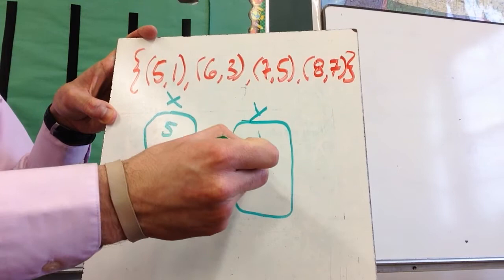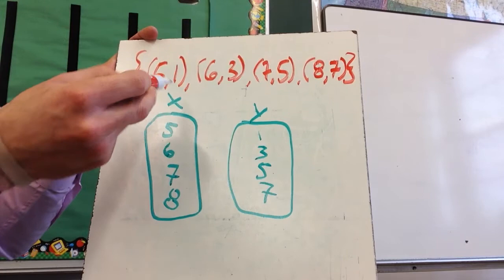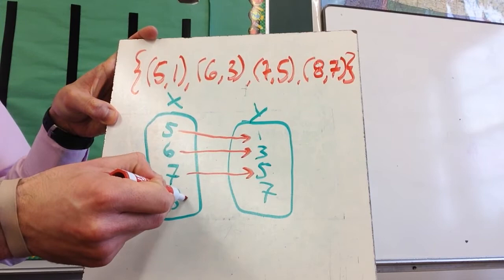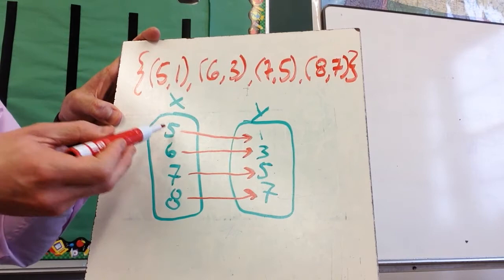And then what I'm going to do is connect the x that corresponds to the y. So the 5x corresponds to the 1y. The 6 corresponds to the 3. The 7 corresponds to the 5. And the 8 corresponds to the 7. Now, this is a function because each x has a unique y, which means that there are not two arrows coming out of any one x.